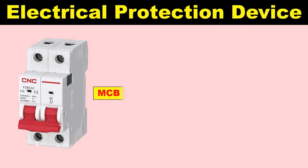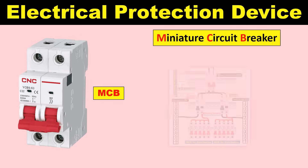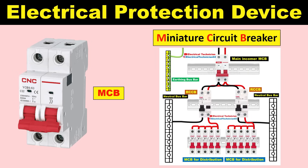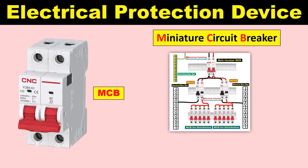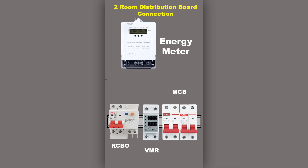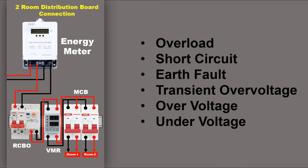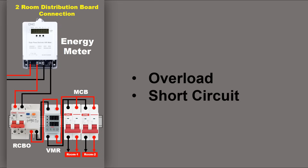The second device is MCB. Full form of MCB is Miniature Circuit Breaker. MCB must have been used in your home — if you look into the main distribution board of your home, there it is installed. The power supply which comes to your home can have many electrical faults. Among all these faults, two are most common: overload and short circuit.